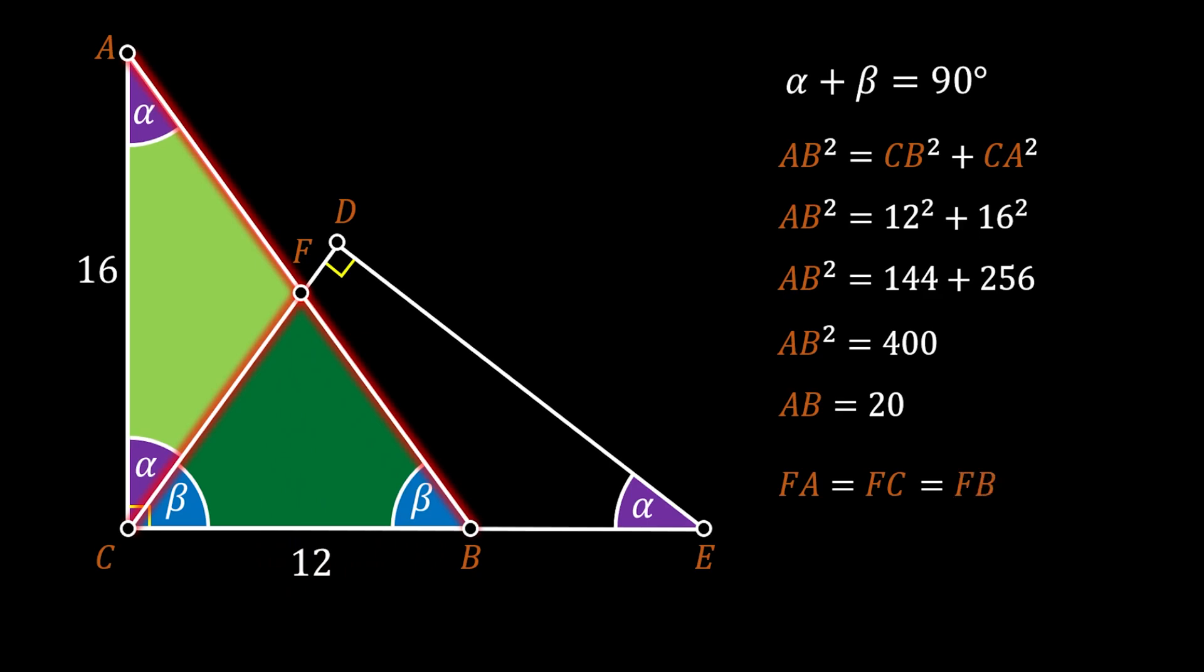Now we can notice that the point F actually divides our hypotenuse AB into two identical pieces. Since we know that hypotenuse is equal to 20, we can easily find the length of FA to be equal to 20 over 2, which is equal to 10.